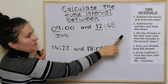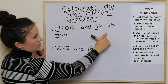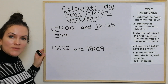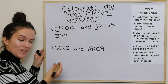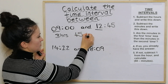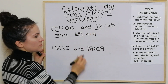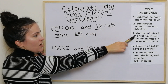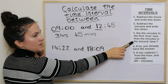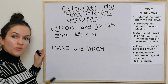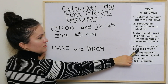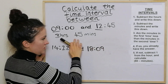Then we subtract the minutes. It's 45 and 0, so 45 take away 0 is just 45. Step 3 asks: are the minutes in the first time less than the minutes in the second time? The answer is yes, so we already have the answer. This is a pretty easy one.